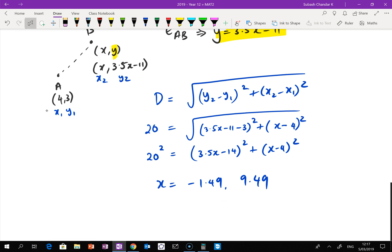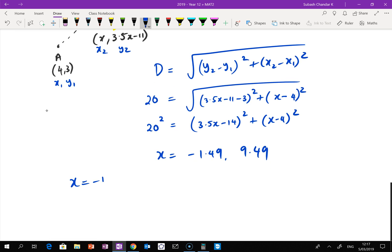You've got to actually figure out what the y values are. So when x equals negative 1.49 and when x equals 9.49, you go back and put it into the equation, which is 3.5 times the x value minus 11.